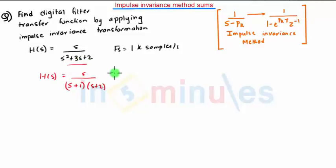Now we will use the same method of partial fraction: A upon (s plus 1) plus B upon (s plus 2). Now we will cross multiply and equate. We finally get A into (s plus 2) plus B into (s plus 1) is equal to s.